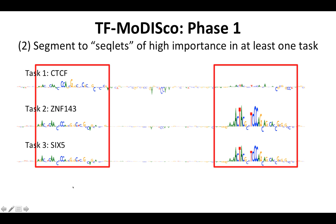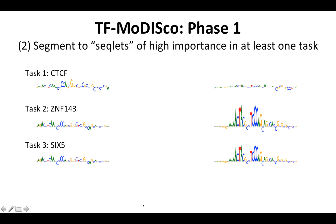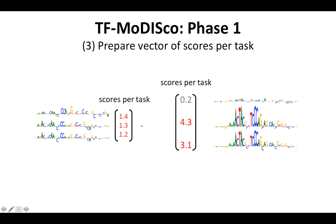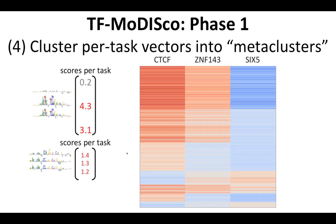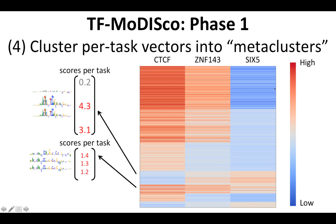We start by segmenting into regions of high importance that we call seqlets — regions that are high in at least one task — and from the seqlets, we extract vectors that represent the activity of the seqlet, or the scores of the seqlet, across all the tasks. We then cluster these per-task vectors into meta-clusters, where all the seqlets that fall into a particular meta-cluster have a similar pattern of activity across the different tasks. So in the topmost meta-cluster, these are seqlets that positively contribute to CTCF and ZNF143 binding, and negatively contribute to SIG-FI binding.